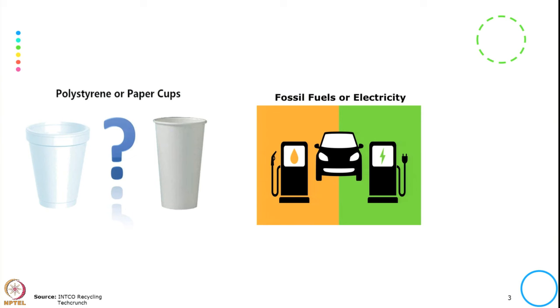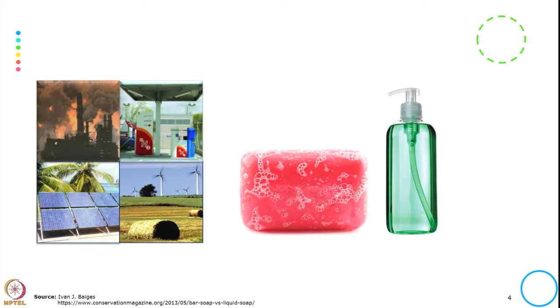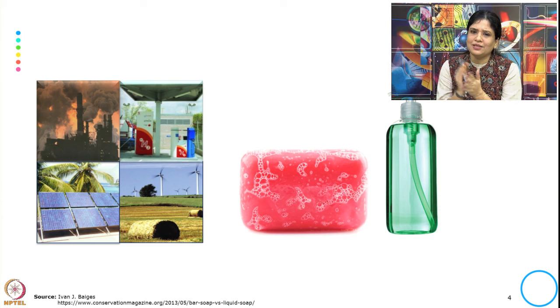Looking at the pictures displayed in the slide, given a choice, which one would you pick among the cups or the source of fuel? We know that one source is clean and the other is not so clean, or one cup is less damaging than the other. The same story applies to the next slide — whether we should go for liquid soap or bar soap, which is more environmentally friendly, or whether we should go for biofuel, solar, or petrol. On what basis do we make that choice?